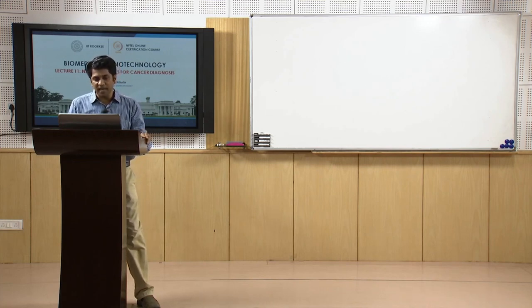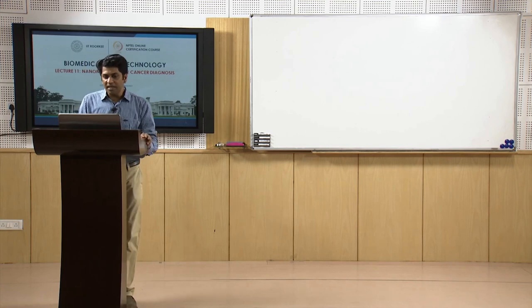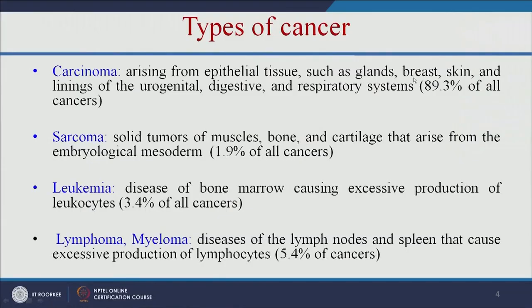There are various types of cancer. Carcinoma arises from epithelial tissue such as glands, breast, and skin, and constitutes about 90% of all cancers. Sarcoma is a solid tumour of muscles and bone, accounting for 2% of all cancers. Leukemia is a disease of bone marrow, constituting 3.4% of all cancers. Lymphoma and myeloma constitute approximately 5.4% of all cancers.